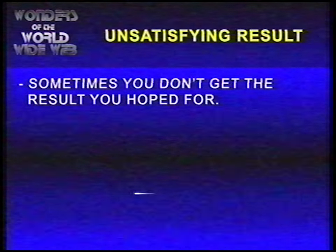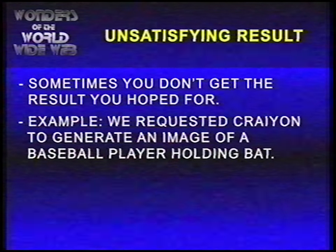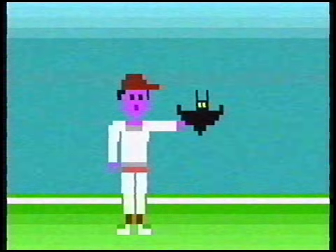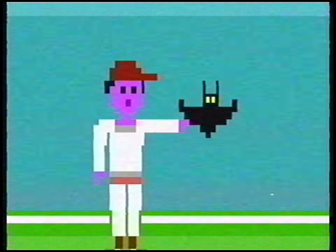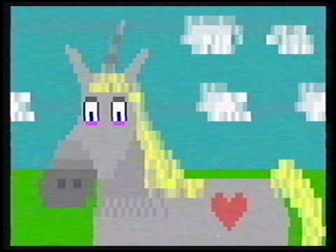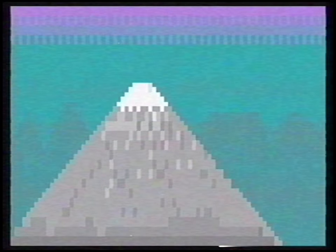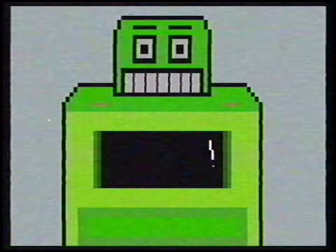We showed you several examples of images that looked exactly what I hoped for, but sometimes it goes wrong. We requested Crayon, for instance, to generate an image of a baseball player holding a bat. This was the result. Here are some other creations Crayon generated in text mode. I can't believe that this is real.